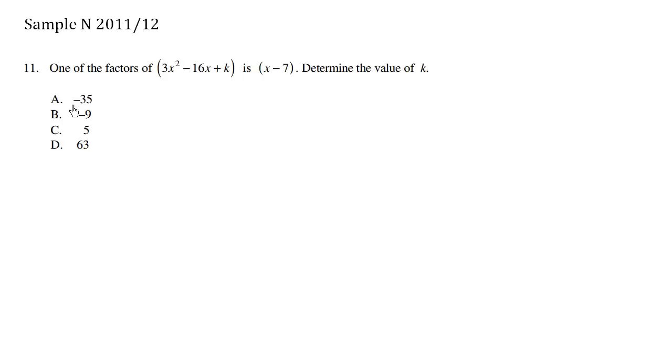One way to do this is to plug in negative 35 into k, or negative 9, 5, and 63, and try factoring. After factoring, if we can see x minus 7 hanging around as one of the factors, we found our answer.